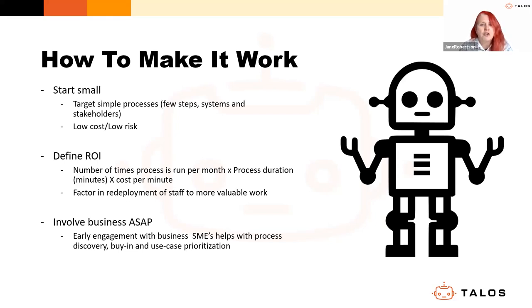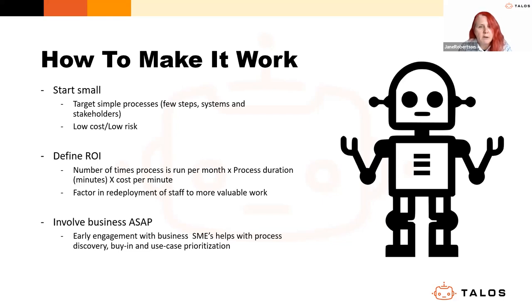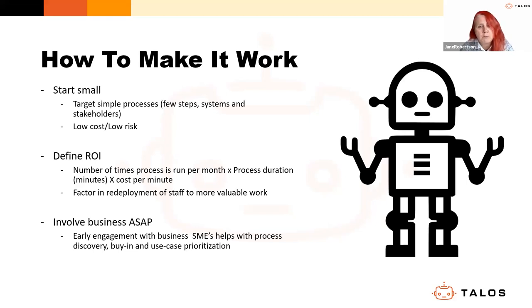Define the ROI — there's a calculation formula on the slide — and make sure you factor in redeployment of staff to more valuable work. Understand how much robot time the process will take up so you know what capacity remains for future processes; that robot can work for you 24/7. Involve the business: get your subject matter experts involved as soon as possible. They're key to process discovery, team buy-in, and use-case prioritization. A small POC quickly ignites interest from the wider business, and staff who experience the benefits will bring their manual, repetitive, tedious processes forward — with very little effort from management.